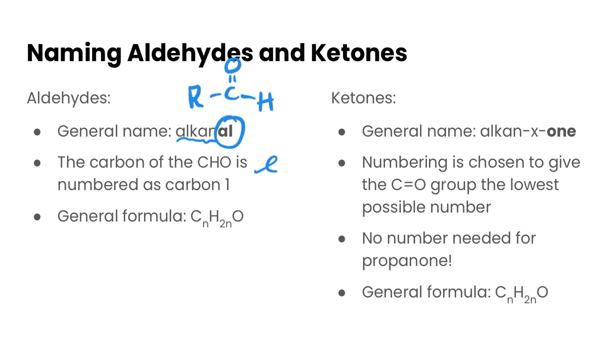The carbon on the C double bond O-H group, or sometimes we write it condensed as CHO, is numbered as carbon one. It's always carbon one, and we do not need to indicate that in our name. That's because it's always carbon one, so it's a bit redundant to put it into the name.